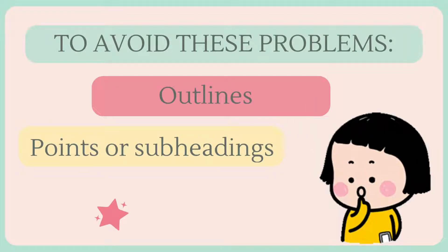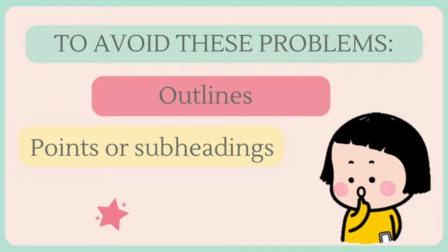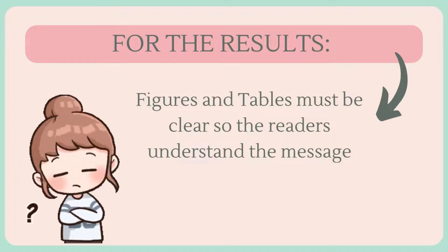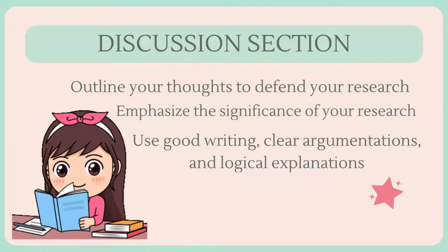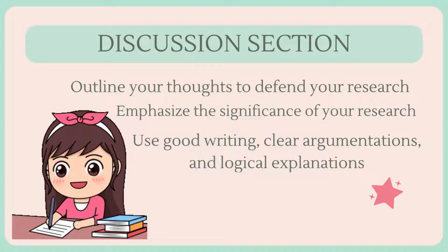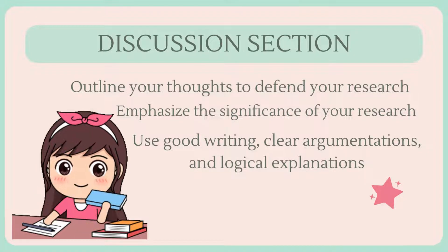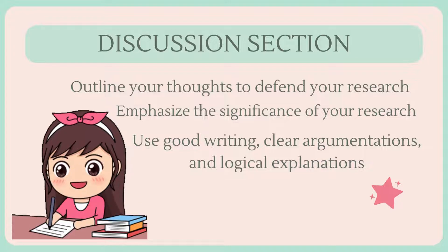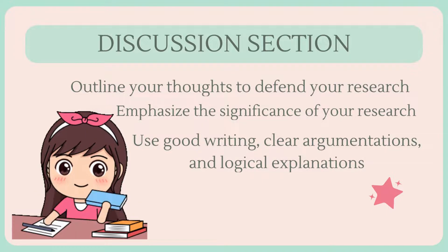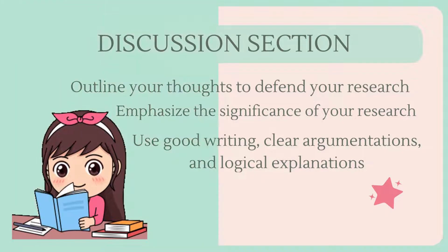To avoid these problems, you can use an organized structure such as outlines, points, or subheadings to write the results and discussion section. For the results, figures and tables must be clear so the readers understand the message. In the discussion section, outline your thoughts to defend your research and to emphasize the significance of your research. Use good writing, clear argumentations, and logical explanations in this section to support your conclusion.